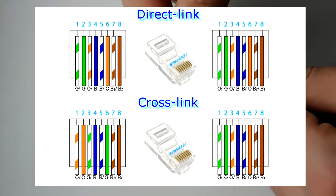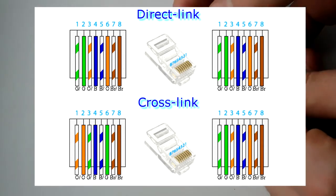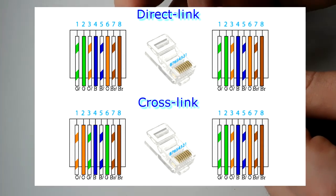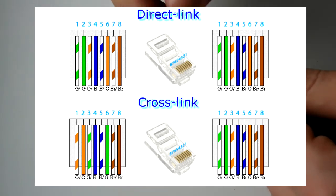Note that there are 2 types of crimping. First type is direct. In this case both cable ends crimp equally. We use this type to connect PC to network device like router or controller.